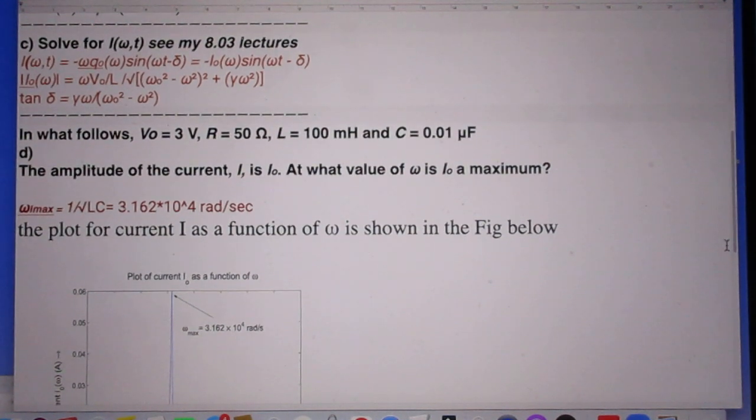Solve i as a function of omega as a function of t and a function of omega. So i(ω,t) this is then the solution. And you can look up in 803 how I arrive at this solution. I introduce an i zero which is the magnitude of the current which itself is a function of omega. And you see that here. These vertical bars means the magnitude. And the tangent of the phase angle delta is then γω divided by ω₀² - ω². Again you don't pull this out of blue sky. You have to watch my solutions in 803 to a driven LRC circuit.